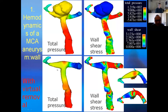This shows total pressure and wall shear stress before the aneurysm was virtually removed. These two figures show the aneurysm virtually removed. After removal, the total pressure at the top of the bifurcation wall is very high — shown in red. The shear stress is also very high, as red as the blood flow impediment.